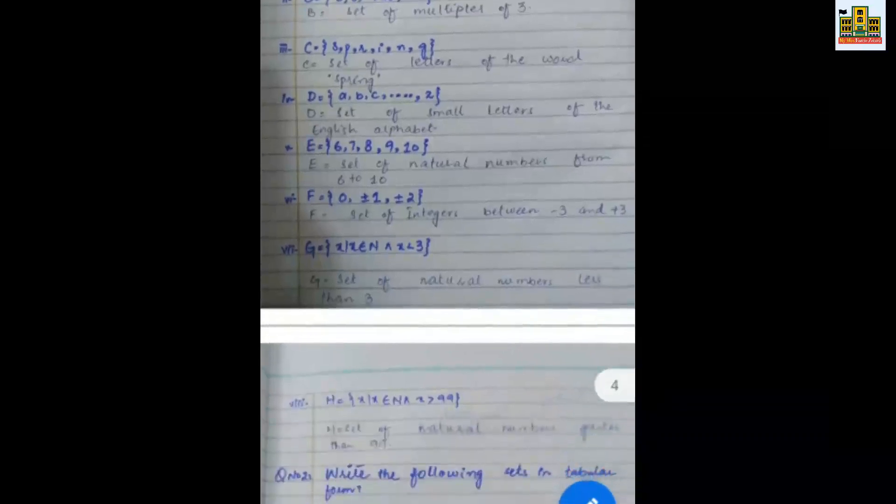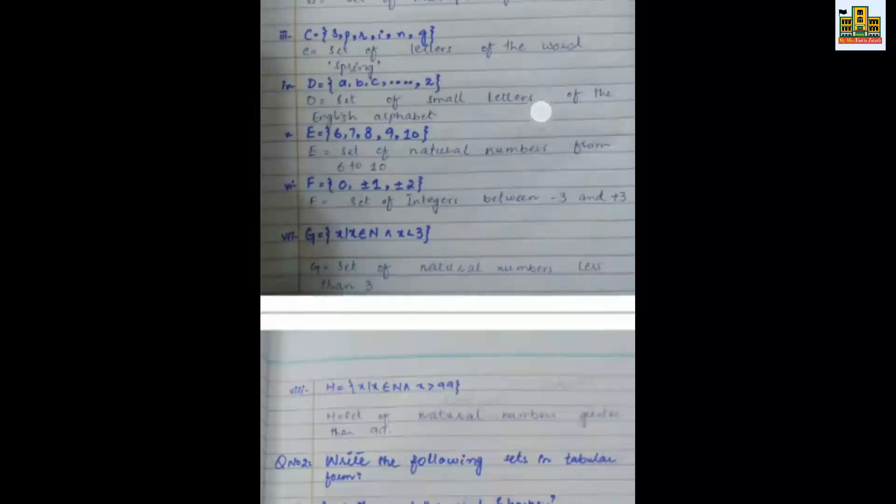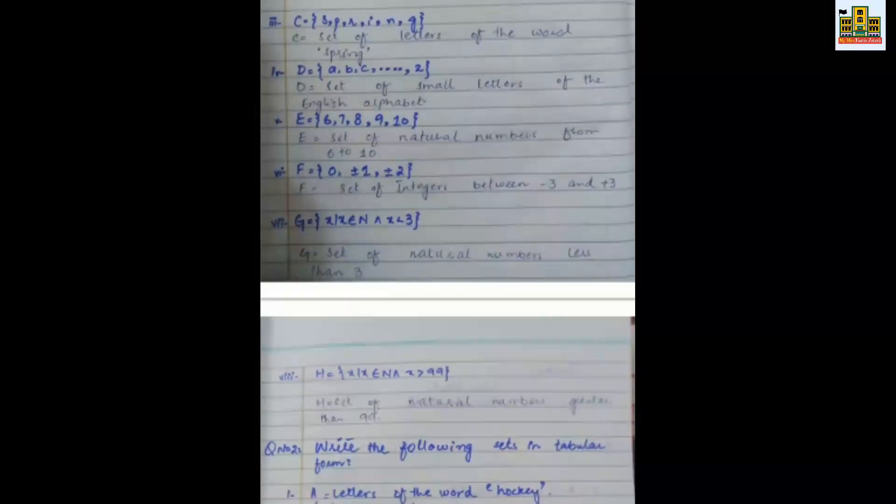Next question you have, F is equal to 0, plus minus 1, then plus minus 2. You know that integers are one set. It's set in which you have positive and negative. When you have any value set plus or minus sign as it is, it means that minus value is included and you have positive value. So what do you have? This set of integers between minus 3 to 3.